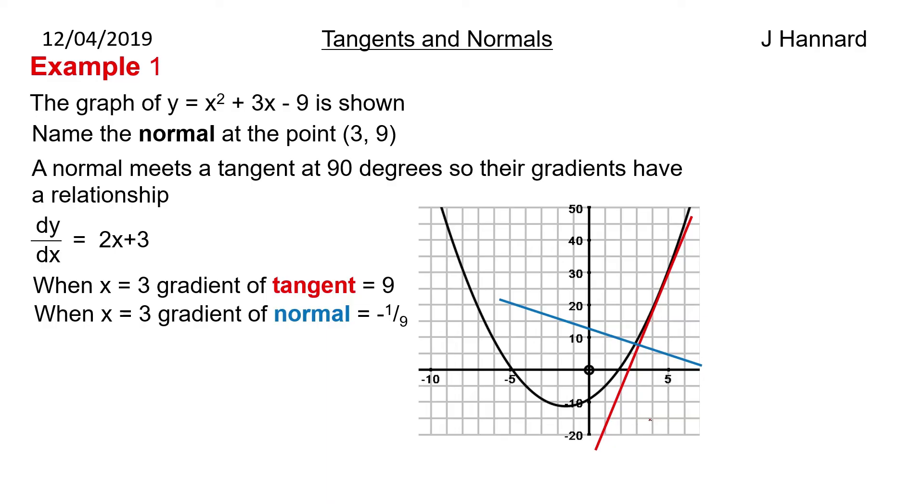If you don't understand that, then go back and watch the gradient of a line lesson that we did. So we've got the point (3, 9), we've got the gradient of -1/9. So we stick it in: y - b = m(x - a). So we get y - 9 = -1/9(x - 3).